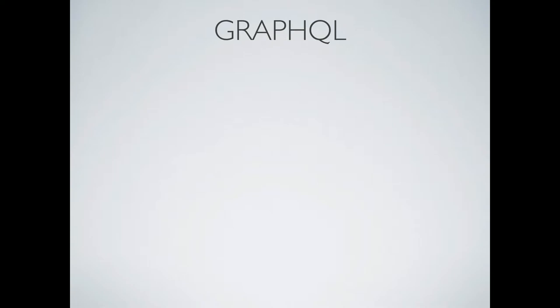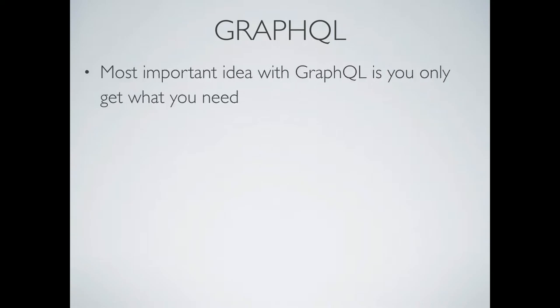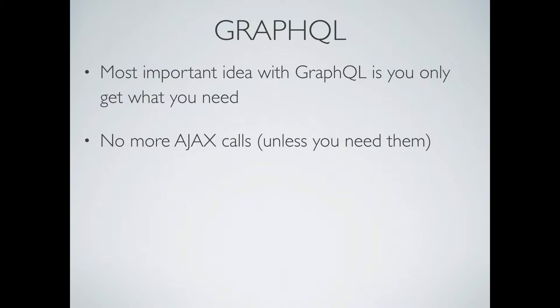Now we're back to GraphQL — it was a main part, but it's also a main idea. Like React, it was developed internally at Facebook back in 2015. It's starting to be seen as a popular alternative to REST and JSON APIs. The most important idea is that you only get the data that you need. In terms of Gatsby, all your traditional AJAX calls normally done in React components are now done in your Gatsby node file or with the plugin, then queried with GraphQL in the component.